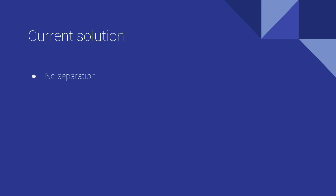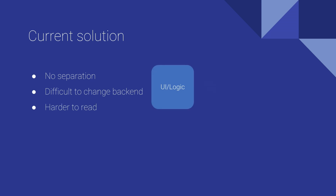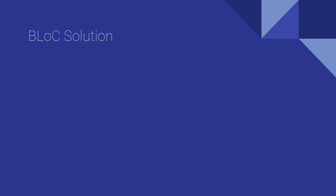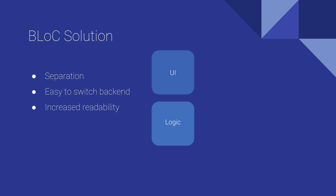For the Firestore CRUD project we can actually improve on some things. With the current solution we have no separation of logic and UI, it's difficult to change out the backend if you don't want to use Firestore anymore, and it becomes quite hard to read. A way to improve this is to implement the BLoC pattern, which will give us better separation, make it easy to switch out the backend, and also increase readability. In this video we're going to look at that.